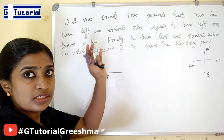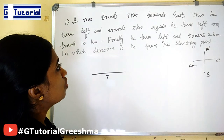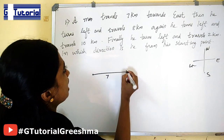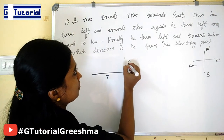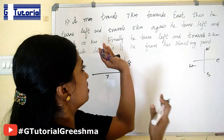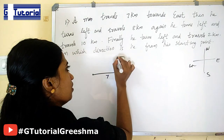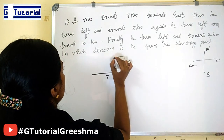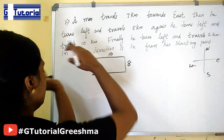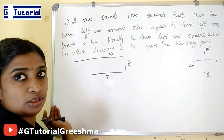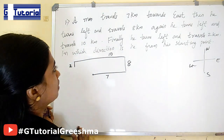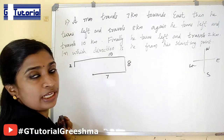Again, traveling in that direction, he turns left — which is now west — and travels 10 km. Finally he turns left again, which brings him facing south, and travels 2 km. In which direction is he from the starting point? So now he has reached a final position.